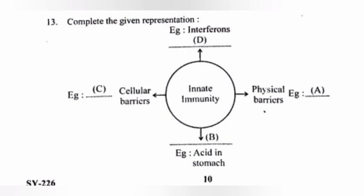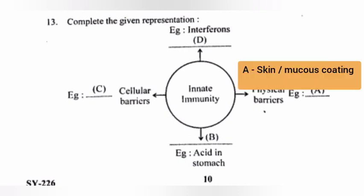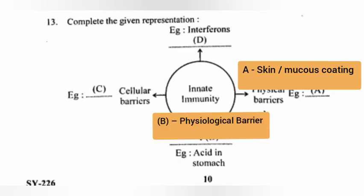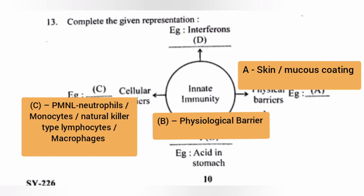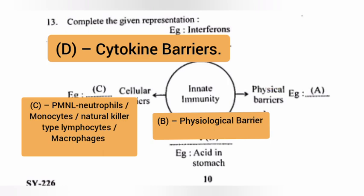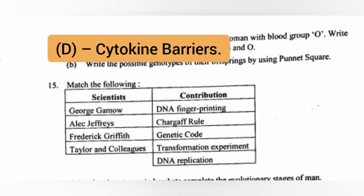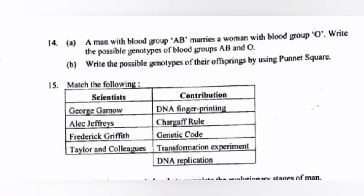Question 13: Complete the given representations. Answer: a) skin or mucous coating – physiological barrier; b) PMNs, neutrophils or monocytes – natural killer type lymphocytes; c) macrophages – cytokine barrier.